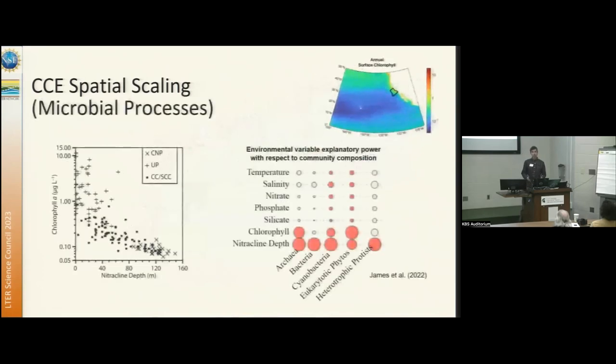One of the structuring ways that we look at our ecosystem is by comparing things to the nitrocline depth. Nitrocline depth is basically a proxy for nutrient supply to the ecosystem. Deep nitrocline, low nutrient supply. So the graph on the left has been one of our fundamental ways of looking at the ecosystem. It shows chlorophyll as a function of nitrocline depth, and we see that there's a strong relationship when there's a lot of nutrient supply, there's a lot of chlorophyll. That makes sense.